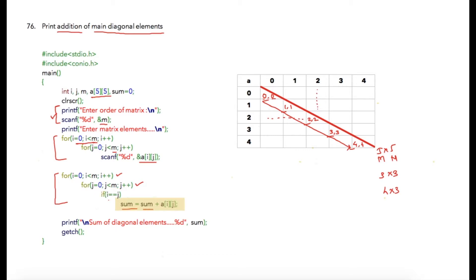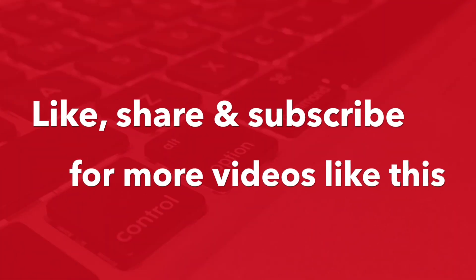When the row number equals the column number, we add that element into the sum variable. Notice that sum is initialized to zero at the top — if it is not initialized to zero it will contain a garbage value and the program will give an incorrect result. Once all elements are iterated using the for loops, at the end I print 'sum of diagonal elements is %d' and the value of sum will be printed.